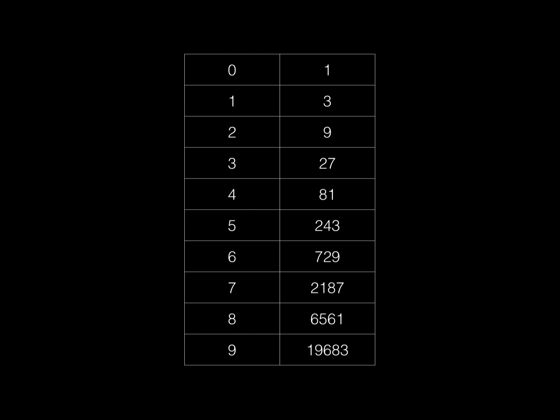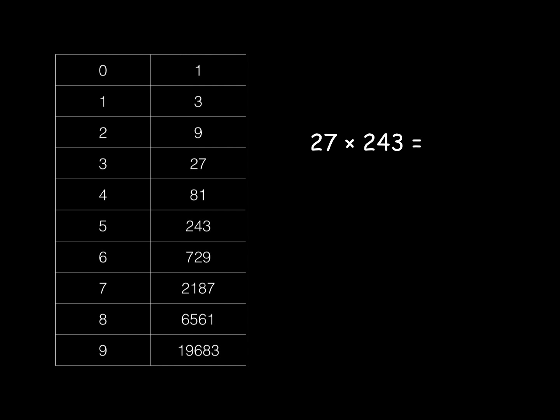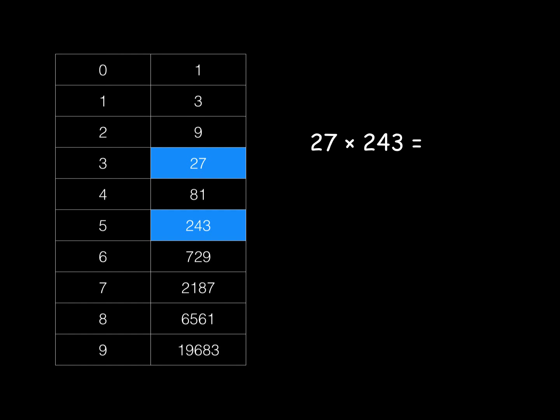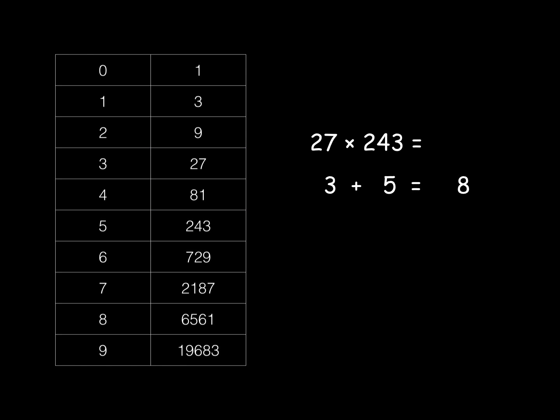multiplying powers of 3 together is almost as easy as multiplying powers of 10 together. Say you wanted to do 27 times 243. Rather than counting zeros, we look up the two numbers in the table and add the numbers that go with them, and see that the answer is 3 multiplied by itself 8 times, which the table tells us is 6561.